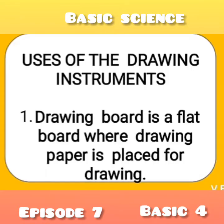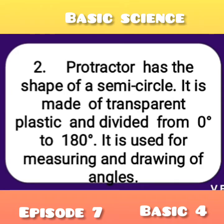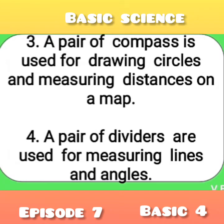Let's look at the uses of the drawing instruments. The drawing board is a flat board where drawing paper is placed for drawing. The protractor has the shape of a semicircle; it is made of transparent plastic and divided from 0 degrees to 180 degrees, and it is used for measuring and drawing of angles.